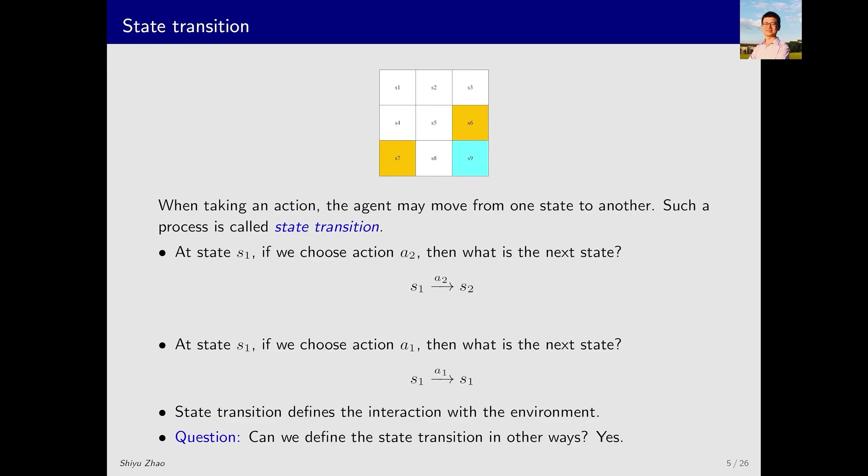State transition actually defines the interaction between the agent and the environment. Can we define this interaction in other ways? Since this is a simulation, a game, we can define the interactions arbitrarily. For example, if the agent moves upwards and hits a wall, it might bounce back or possibly even bounce to the side, ending up in state S4 or even bounce further to state S7. Since it's a game, it's up to us how we define it. However, in reality, it doesn't work like this. For instance, a robot in a specific location may not be able to move to an arbitrary location. Therefore, we cannot define interactions arbitrarily in real-life situations.